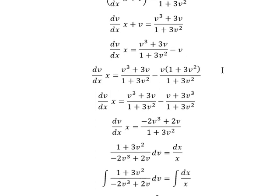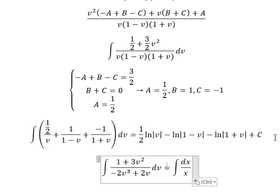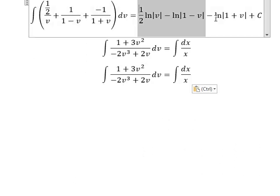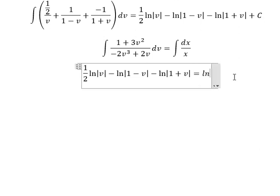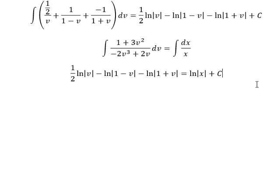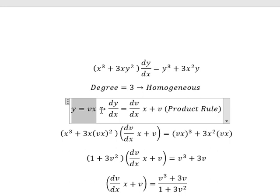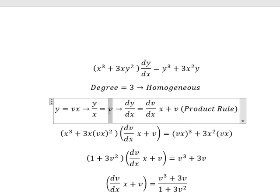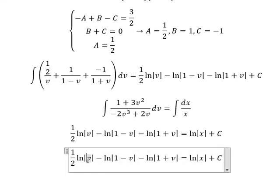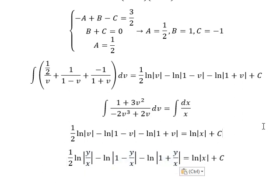Now we go back and integrate. The integration gives us ln of the absolute value of s plus a constant C. Substituting back, we divide both sides by s and replace v with y over x to get the final answer. Thank you for watching.